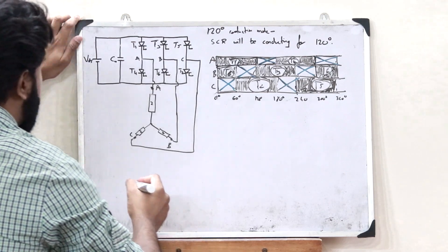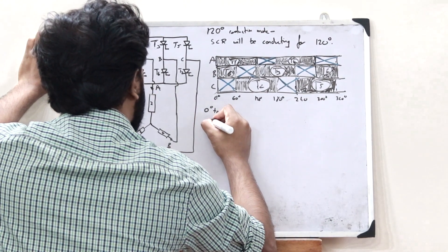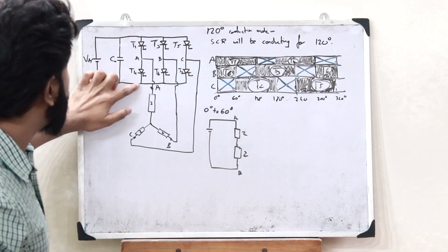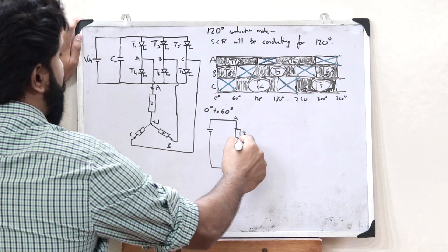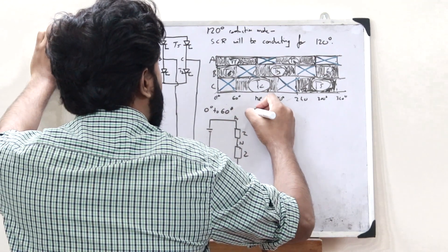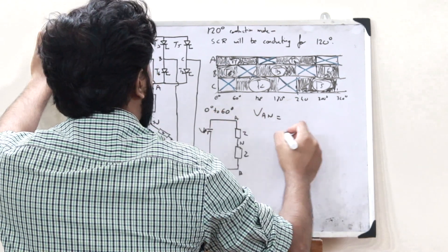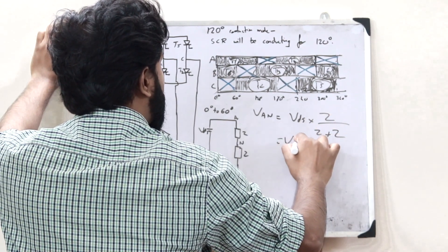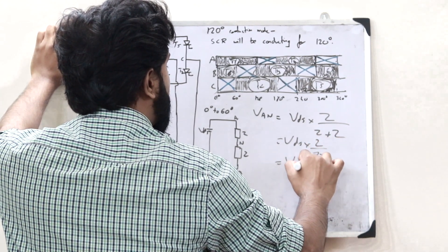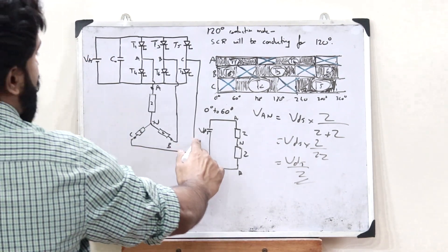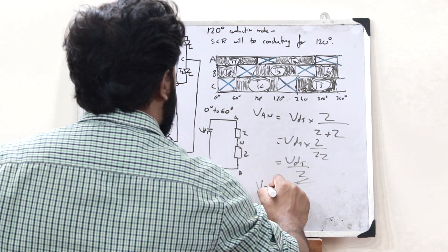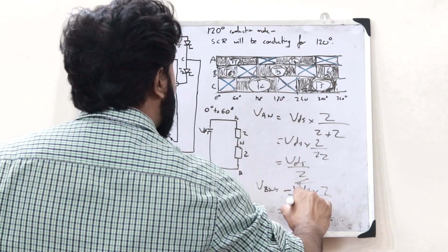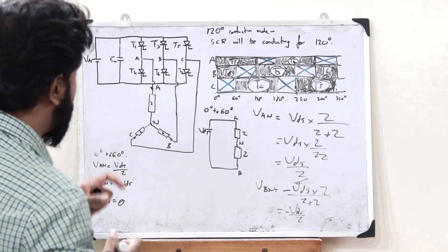From 0 to 60 degrees, the positive value of VDS is connected to A and the negative value of VDS is connected to B, with N as neutral. VAN is calculated as VDS multiplied by Z over the total impedance (Z + Z), which equals VDS × Z / 2Z = VDS / 2. So VAN = VDS/2 for this interval.